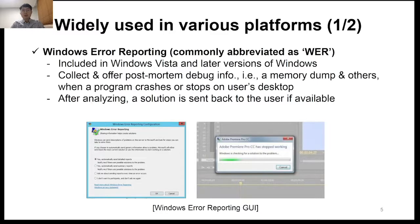Crash reporters have already been applied to various platforms. In Windows, it has been installed since Windows Vista as a service called Windows Error Reporting. It collects crash information and allows developers to debug it in the form of post-mortem analysis. After that, if a solution can be provided immediately, feedback is also provided to the user. This is the Windows Error Reporter GUI.